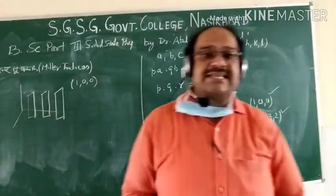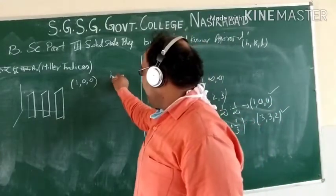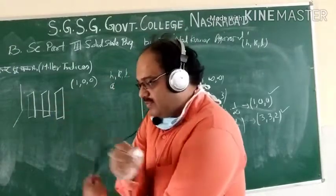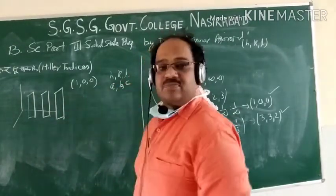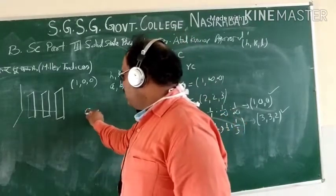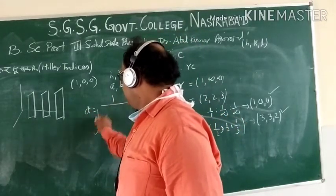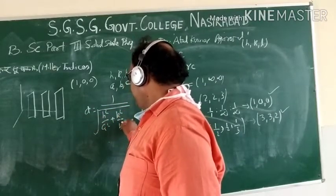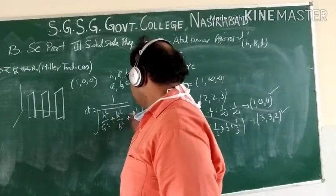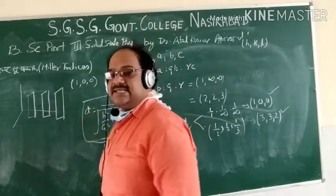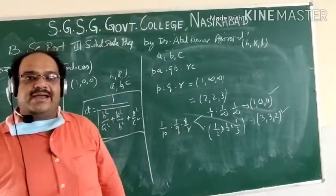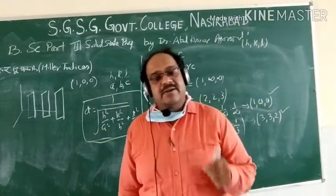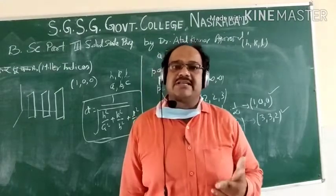Now, what will the distance between two planes be? If I have Miller indices H, K, and L, and the primitives are A, B, C, then the distance between two planes will be: d = 1 divided by the square root of (H² / A² + K² / B² + L² / C²). Remember that the Miller indices can be used to find the inter-planar spacing — this is the distance between two crystal planes.